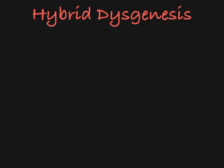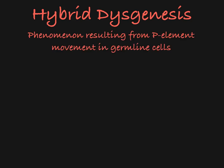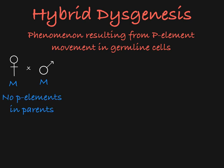This movement of P elements in germline cells is called hybrid dysgenesis. Let's take a look at possible fertilization events between parent generations to see when P elements have the ability to move around the genome in germline cells of resulting offspring. We remember that M strain flies do not carry P elements, so in a cross between two M strain flies, no offspring carry P elements and therefore no P element movement can occur.